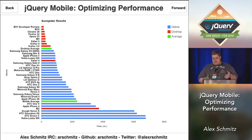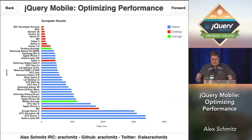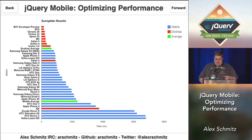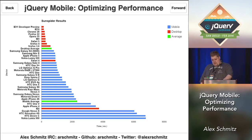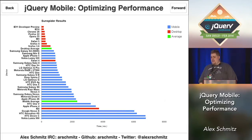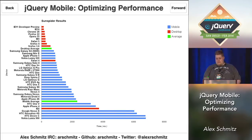This shows average SunSpider benchmark results on different devices, desktop and mobile. As you can see, this is really bad when it comes to mobile. All your modern desktop browsers show really small numbers, but even fairly new mobile devices can't even begin to compare.